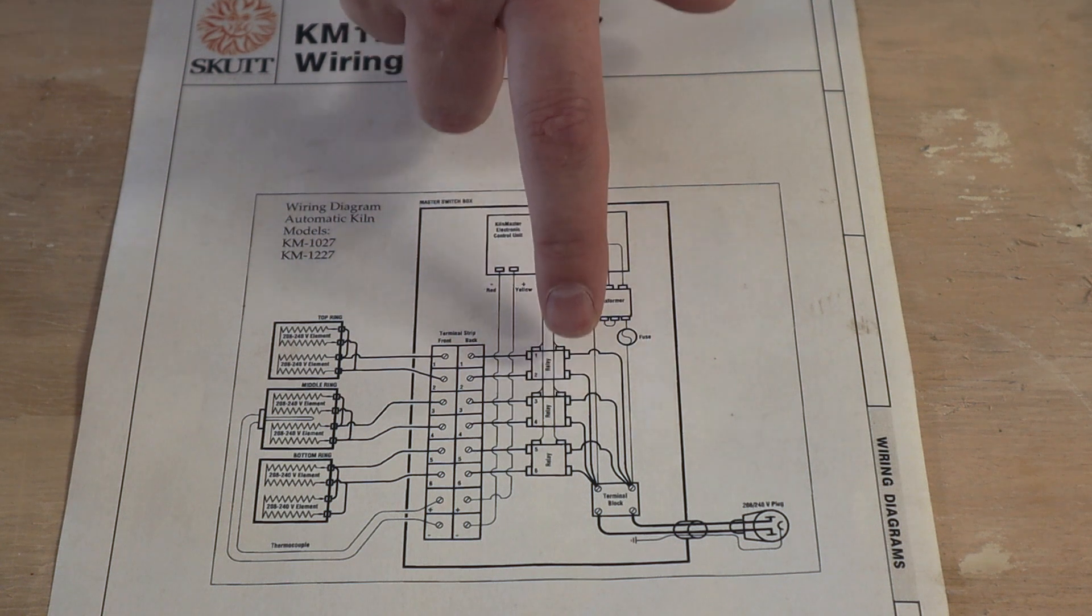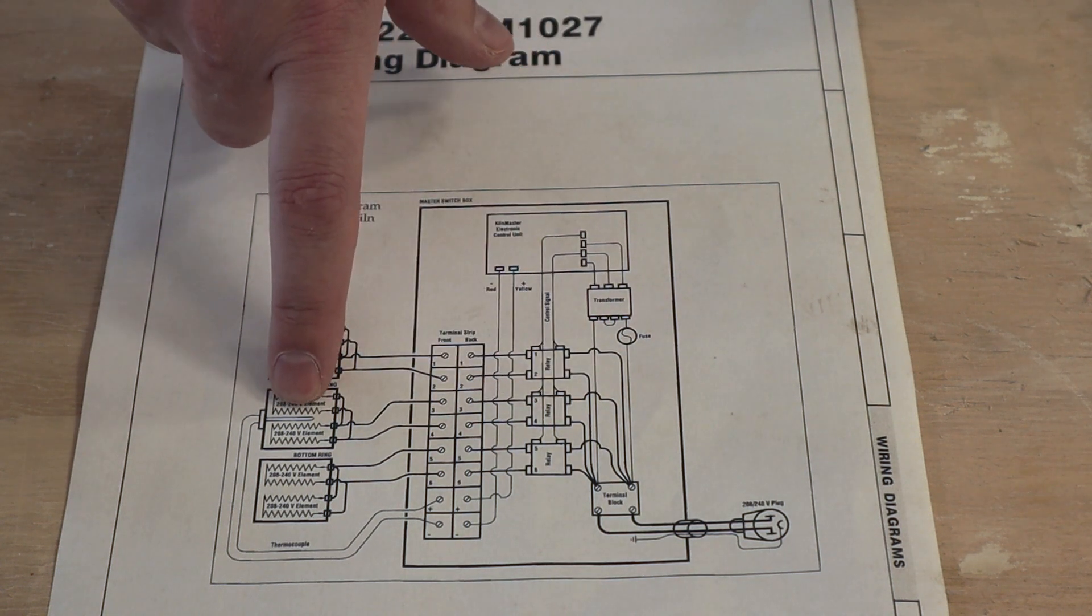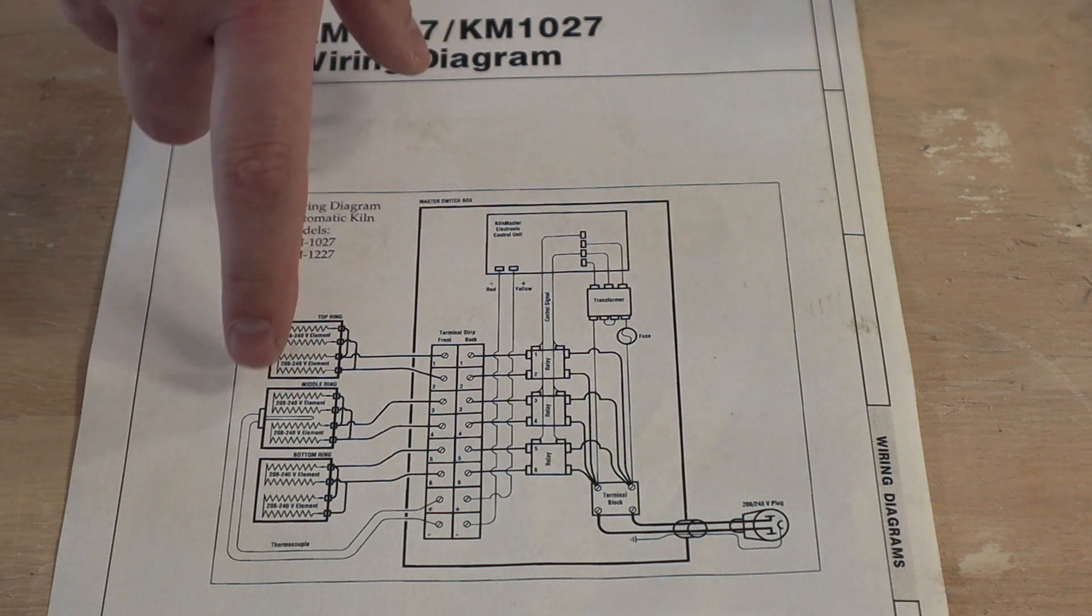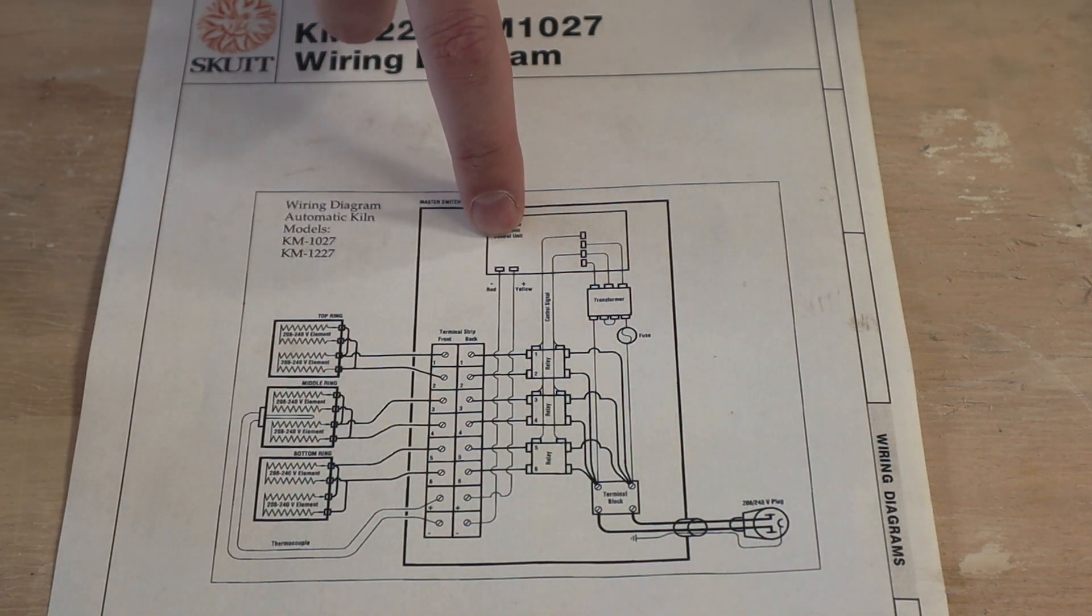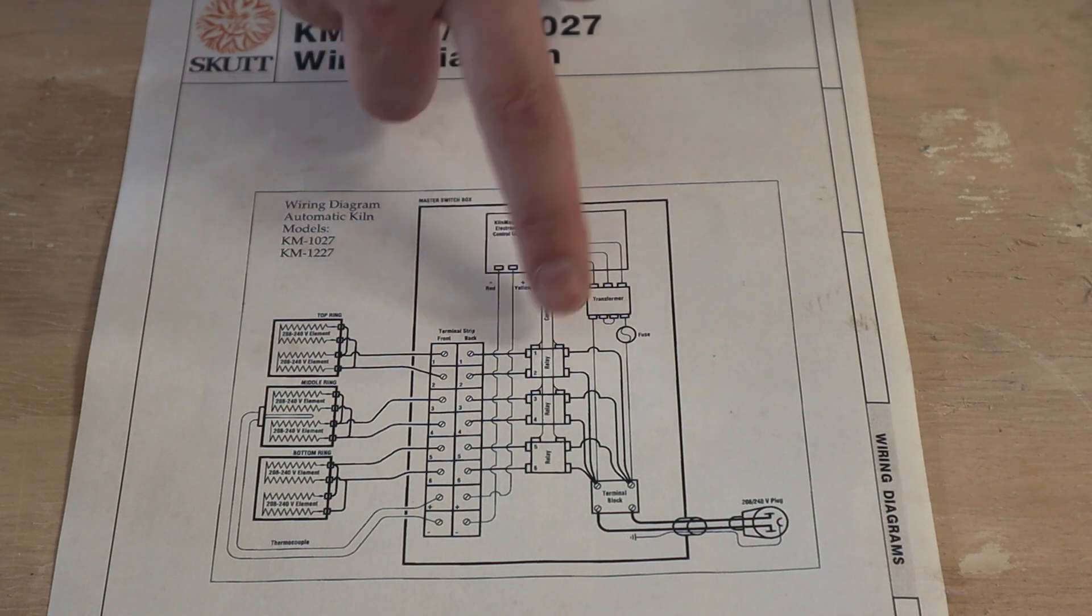Likewise, I only have two relays. Each relay controls one ring so it controls a pair of elements in the kiln. The other part of this is the thermocouple which goes down and connects up to the control board. The control board then turns on and off the relays.